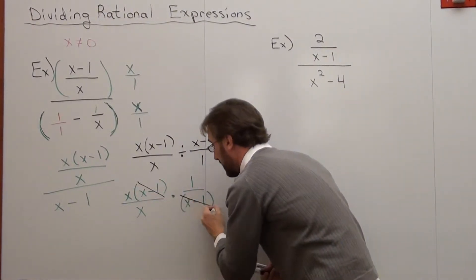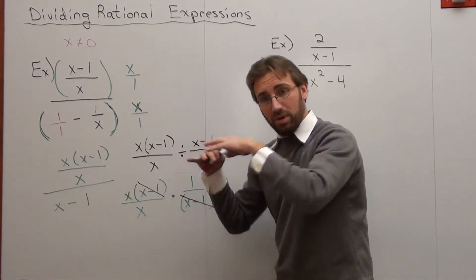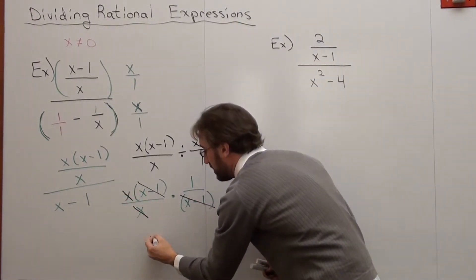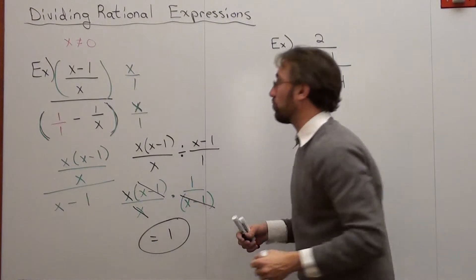x minus 1 cancels, x minus 1 cancels. What's on the bottom and top? That's cross-cancelling. x and x. And my answer is 1.